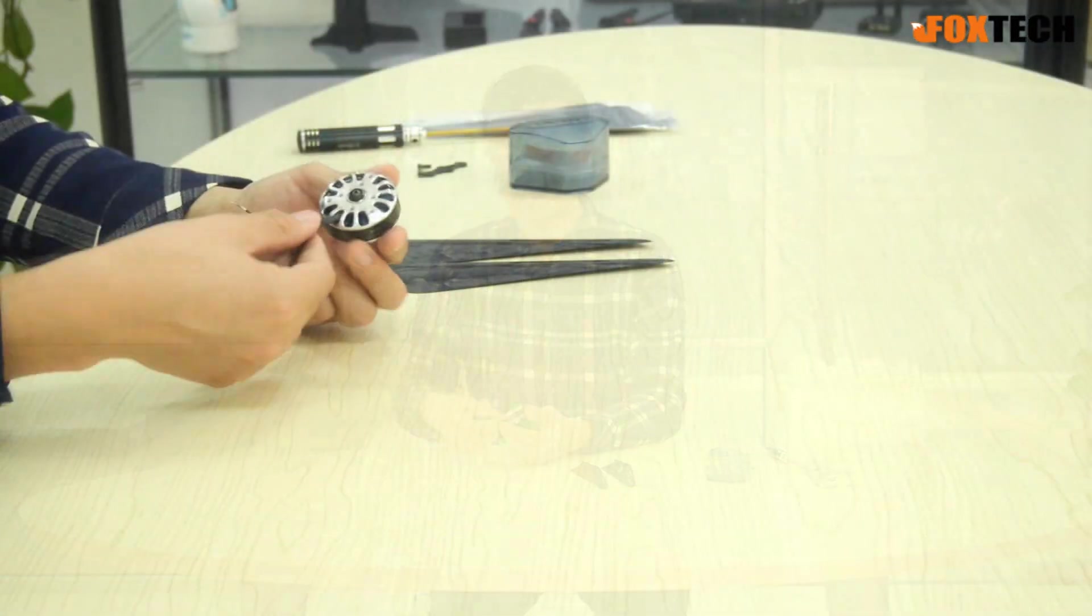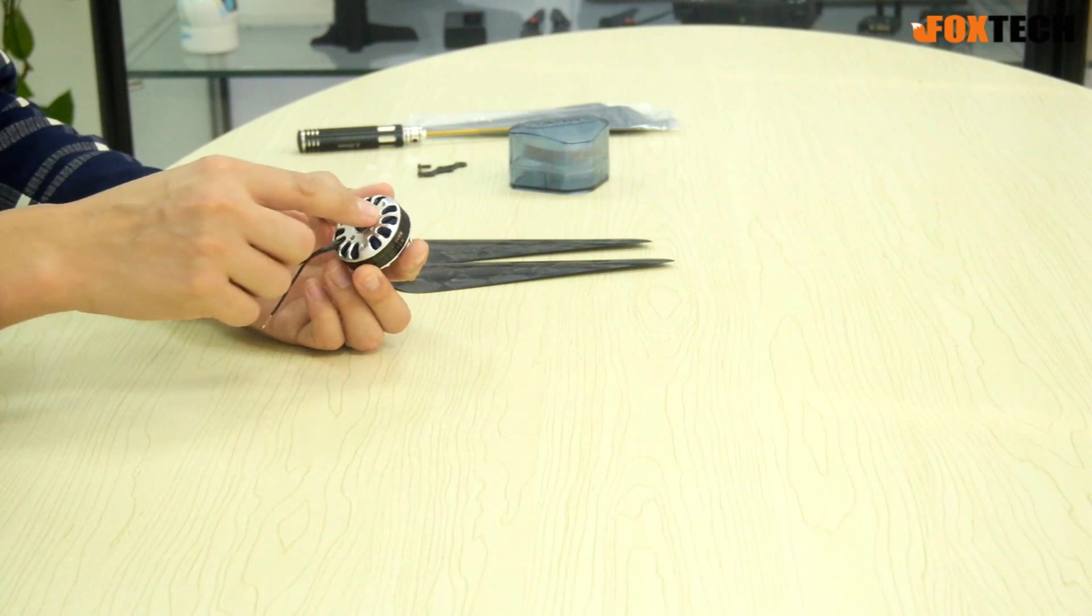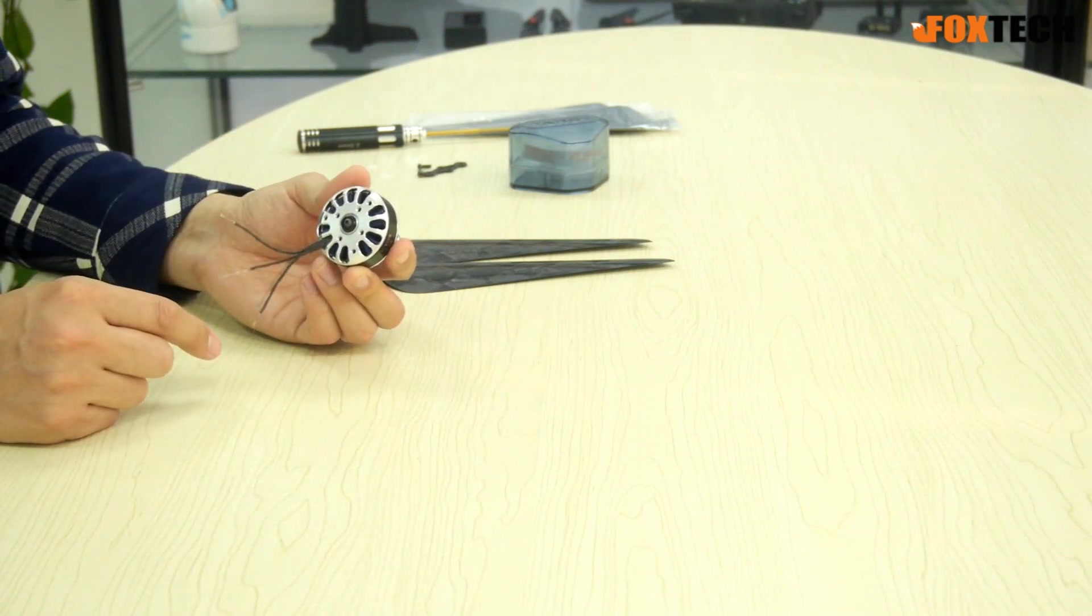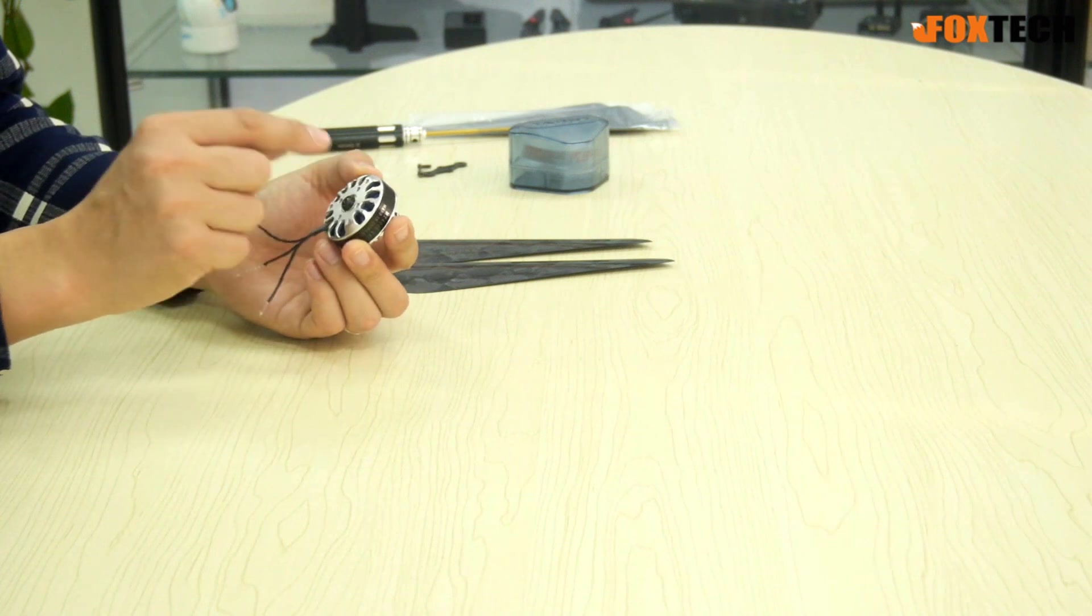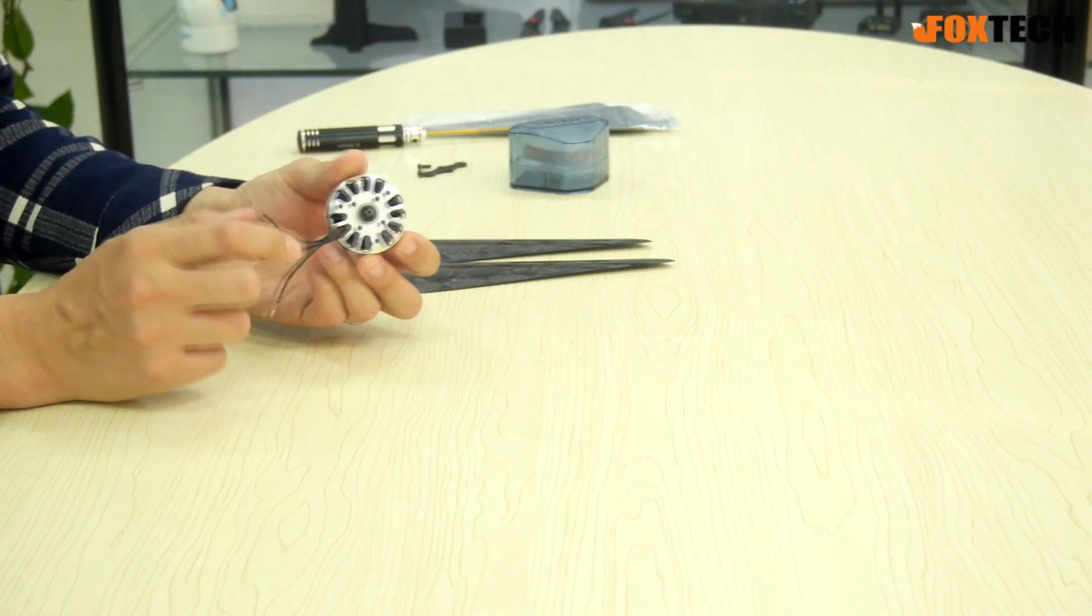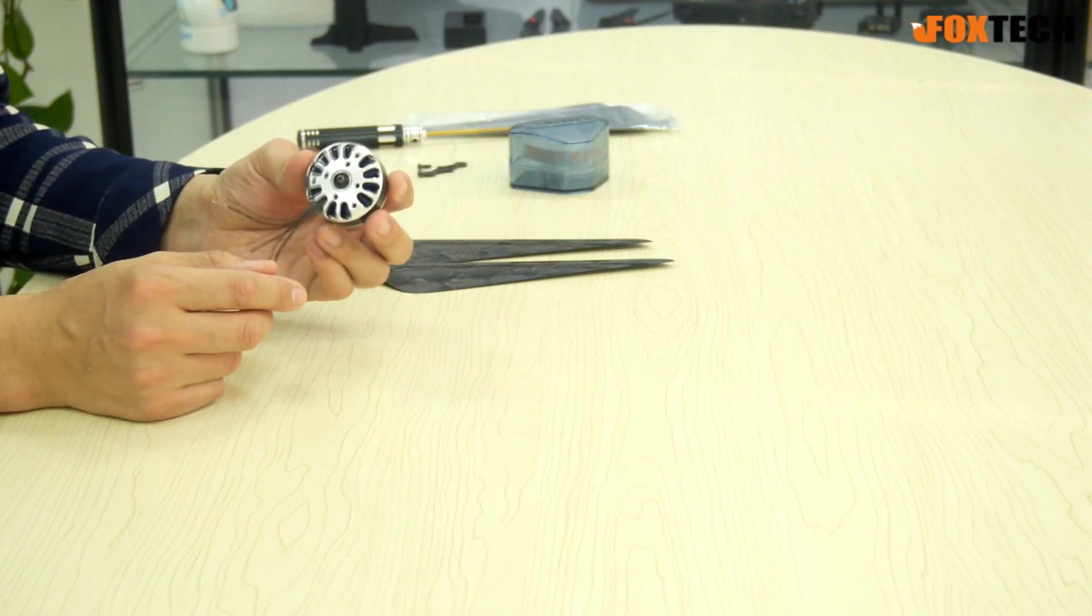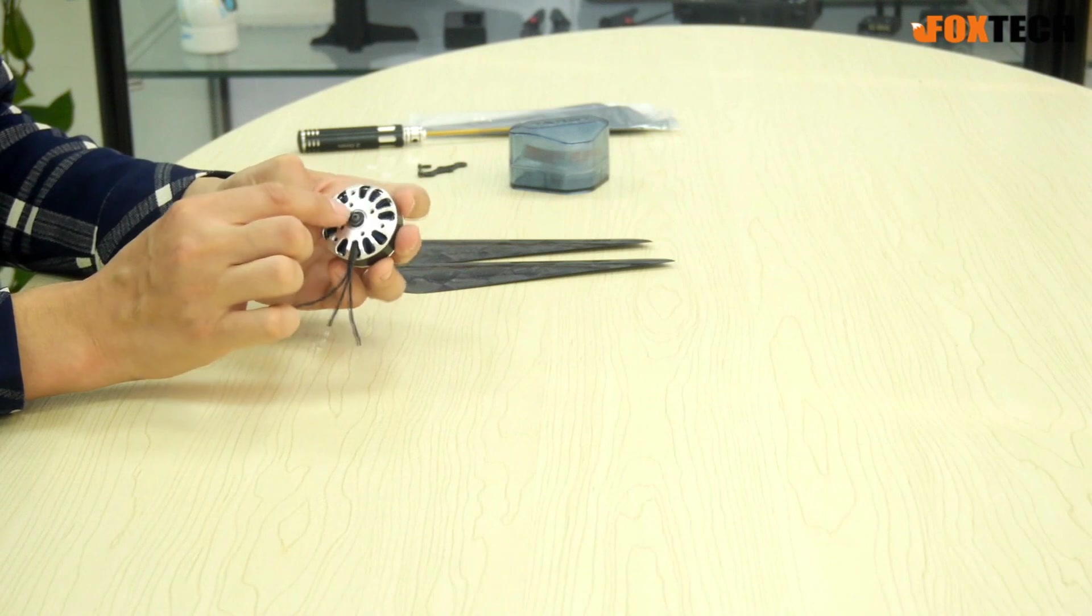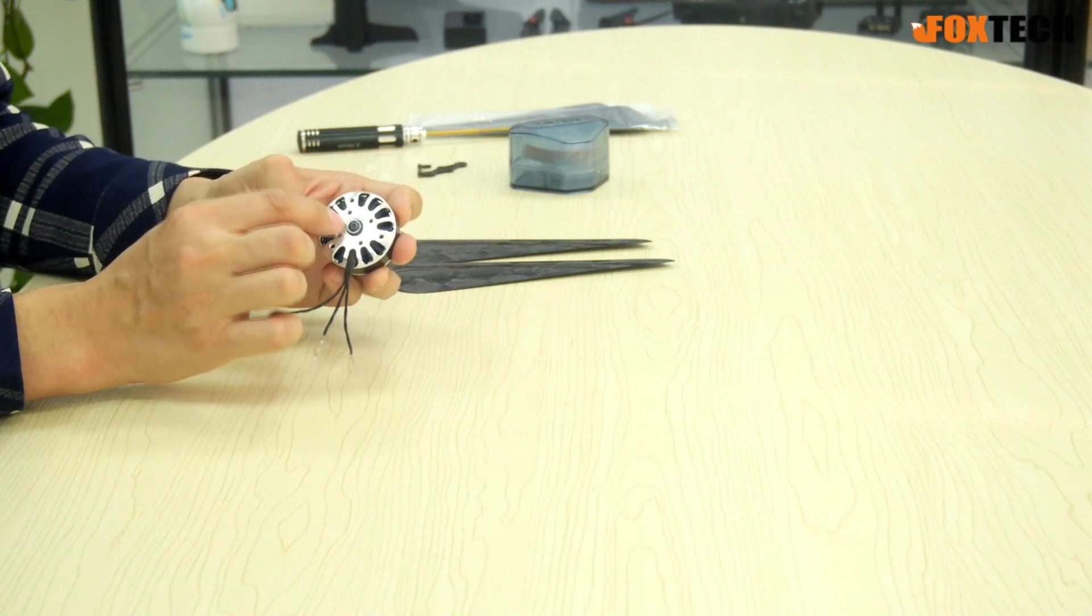Let's also check the distance between the coil and the magnet. The distance is very very small, less than one millimeter. This gives the motor very good efficiency.